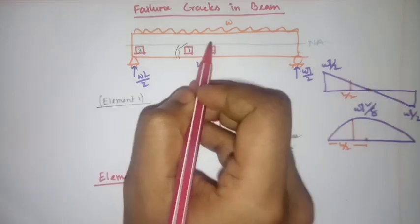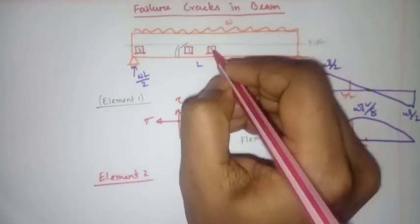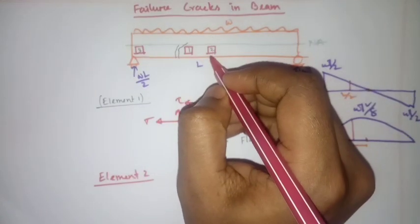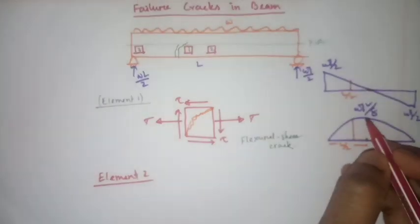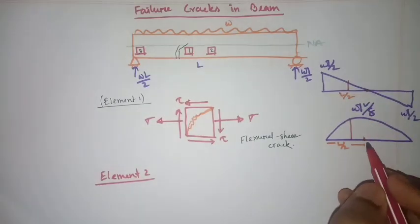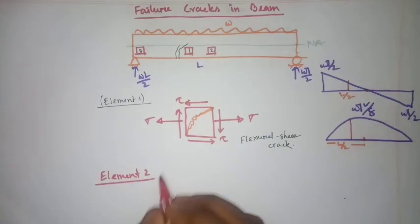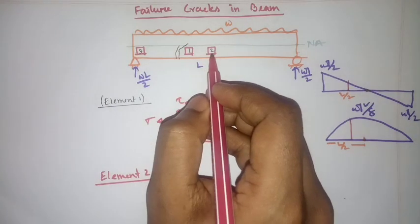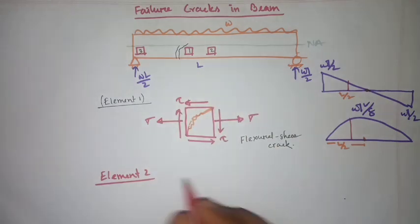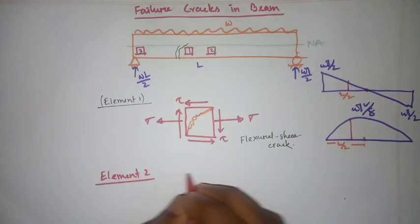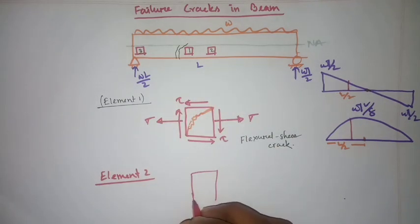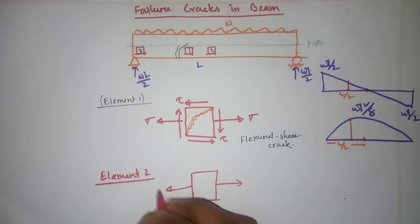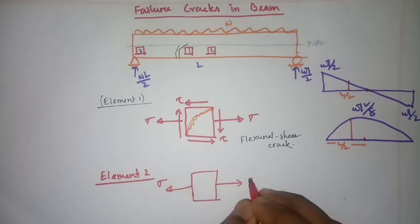For element two at the mid-section, you know that bending is maximum here. Maximum bending will be acting on this section, and at both sides bending stress will be developed.